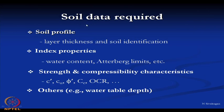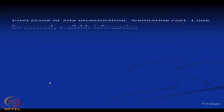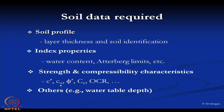Before we go for soil exploration, we should know what soil data is required. The soil profile — meaning the thickness and soil identification — is important. Then the index properties such as water content and Atterberg limits are needed. Strength and compressibility characteristics — that is, cohesion C, friction angle phi, compression index Cc, and over-consolidation ratio OCR — must also be known. Finally, the location of the groundwater table is required.